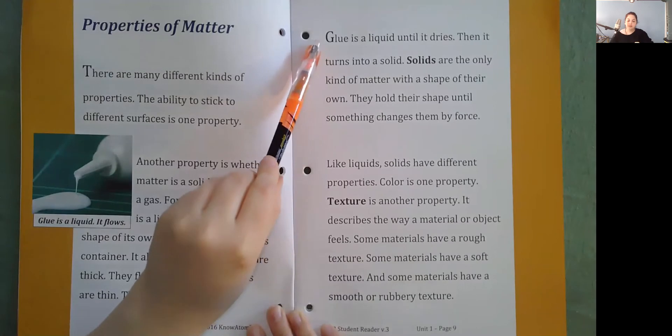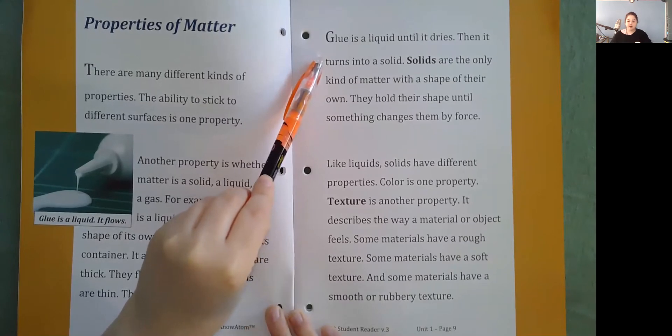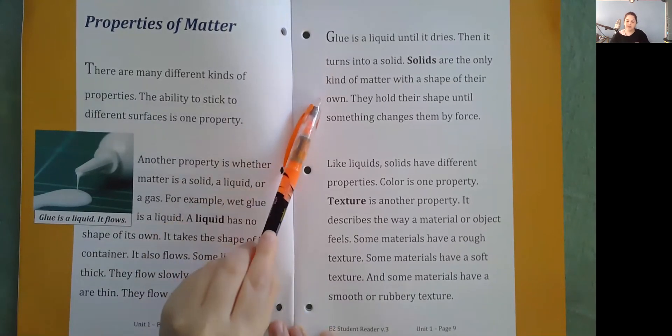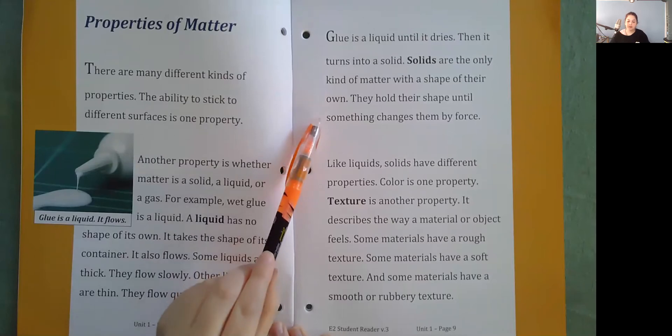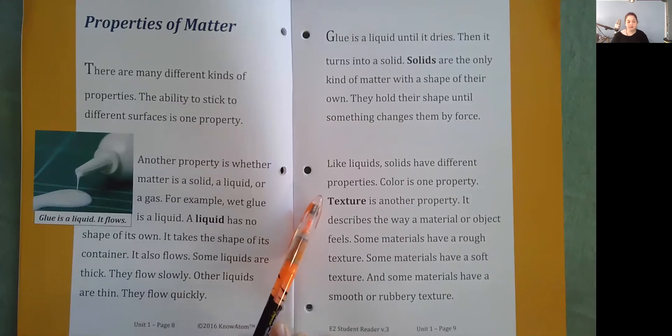Glue is a liquid until it dries. Then it turns into a solid. Solids are the only kind of matter with a shape of their own. They hold their shape until something changes them by force. Like liquids, solids have different properties. Color is one property. Texture is another property.